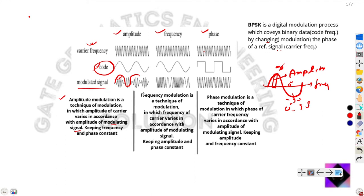In frequency modulation, the frequency of the modulated signal changes — that means the number of waves per unit time changes. You can clearly see that the frequency of the carrier signal is changing, but the phase and amplitude remain constant.